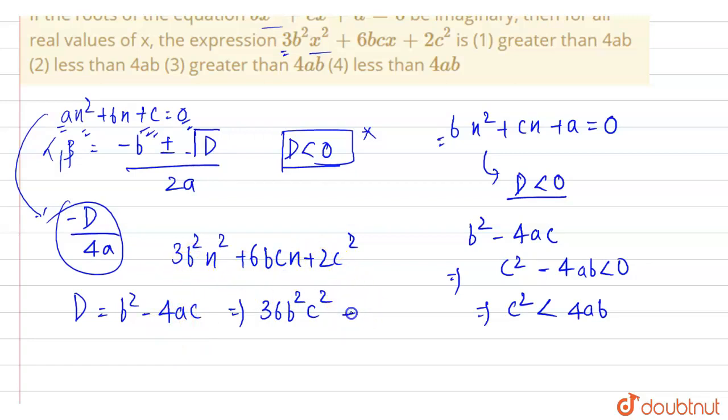So this will be minus 24 minus 24ac. Ac is b square into c square, so this is b square c square. So we have D as this and divided by 4a. So this is divided by 4a and this is also divided by 4a.